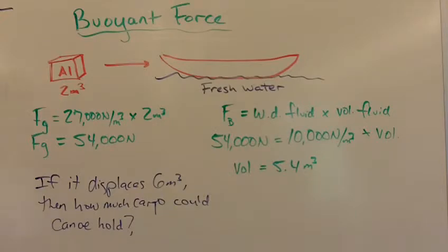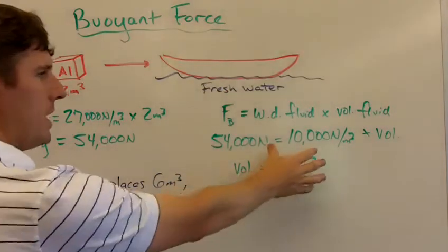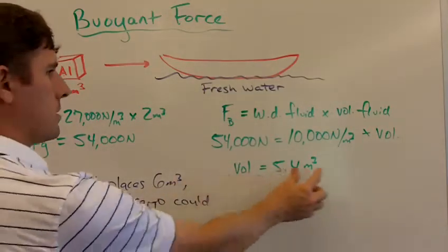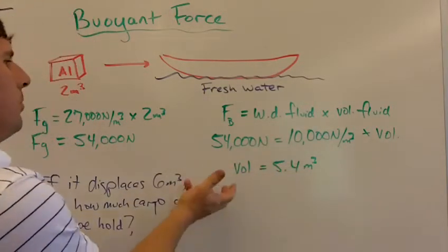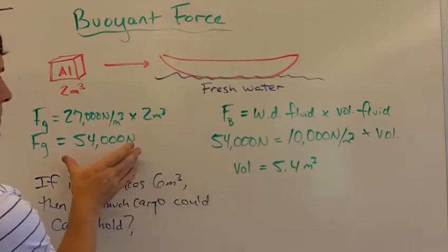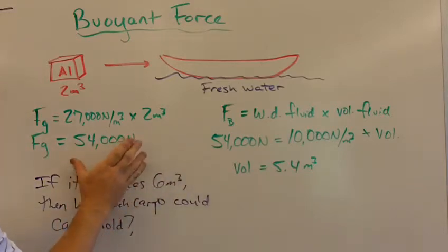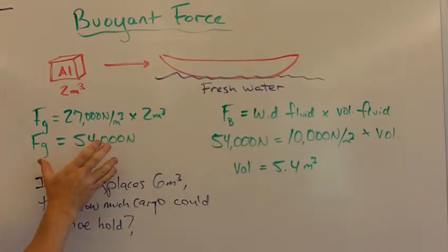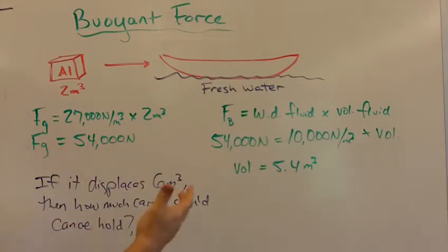Well, we're still displacing fresh water so the weight density is not going to change. The only thing that changes is the volume. So now we're going to have a new buoyant force, and the difference between the buoyant force and the weight of the boat before any cargo is added will be the amount of weight that can be devoted to carrying cargo or people or whatever. Because a canoe all by itself would just drift downstream and end up sunk somewhere and we don't want that.